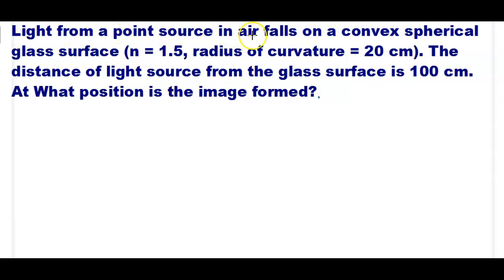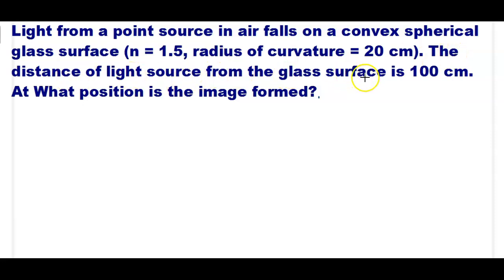Light from a point source in air falls on the convex spherical surface of refractive index 1.5 and radius of curvature equal to 20 cm. The distance of the light source from the glass spherical surface is 100 cm. In what position is the image formed?